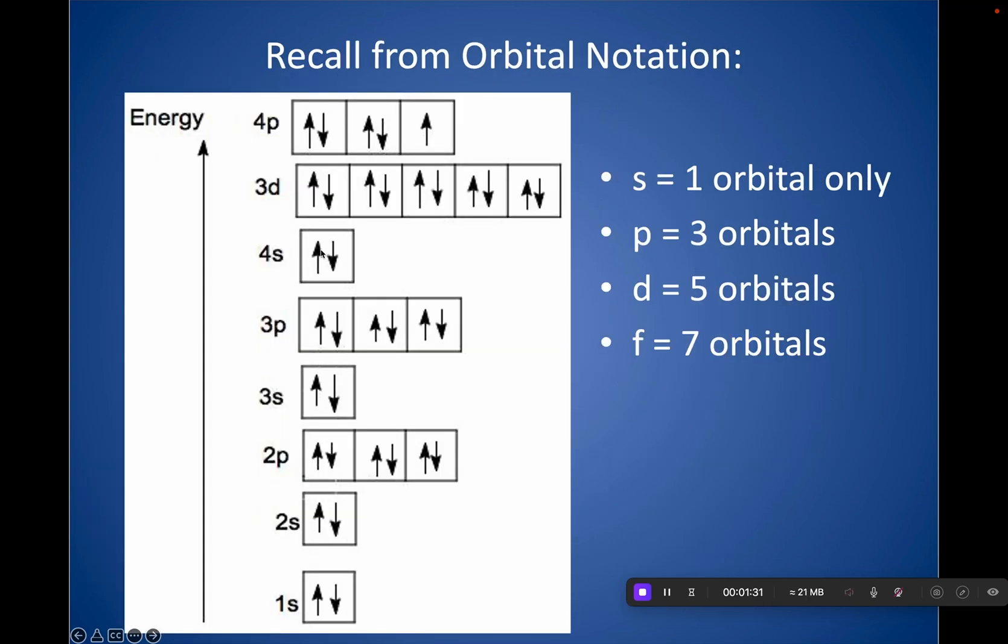Recall from orbital notation that anytime we hit an S, we would draw one box because we said S holds only one orbital. Anytime we would hit a P, we would draw three boxes because P held three orbitals, D5 and F7. So even though in orbital notation, we're drawing these as boxes, they are not actually box shaped.